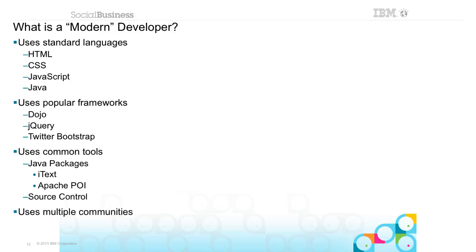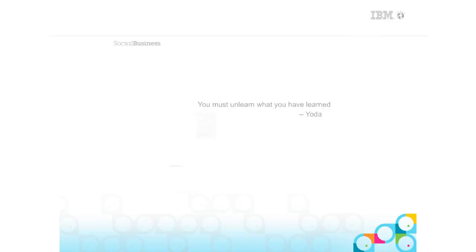Modern developers use real source control — the same source control that .NET developers or other programmers might use. And they use modern communities. It's no longer about going to Notes.net forums. It's about being a fish and getting out of your small pond and getting into the ocean, working with other people and seeing communities out there that aren't really Notes-specific. A modern developer always wants to keep learning. There's no final destination — just the journey from one place to another.